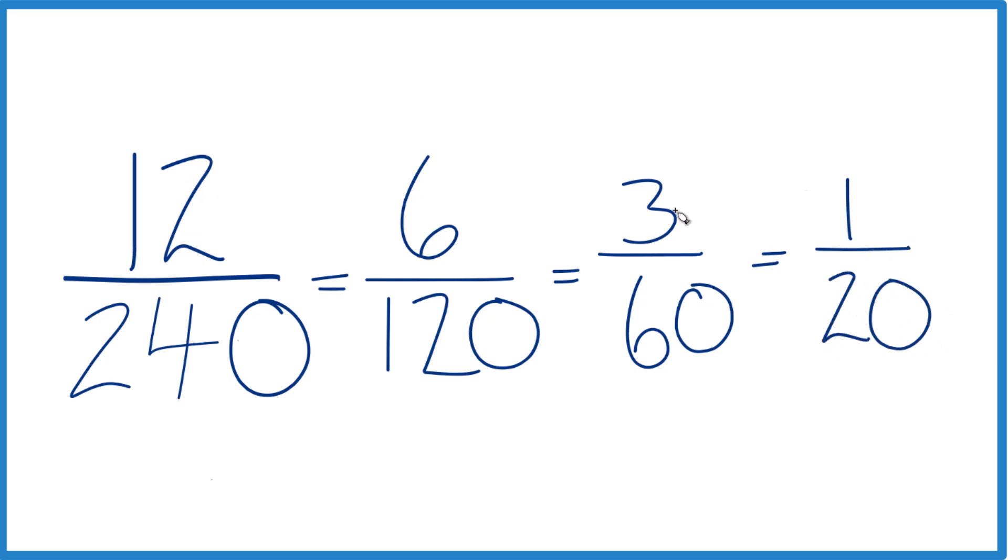So in answer to our question here, this 12 240ths, when we simplify it, we end up with 1 20th, and we can't reduce that any further. These are all equivalent. They have the same value, except that we've taken 12 over 240, and we've reduced it or simplified it finally down to lowest terms.